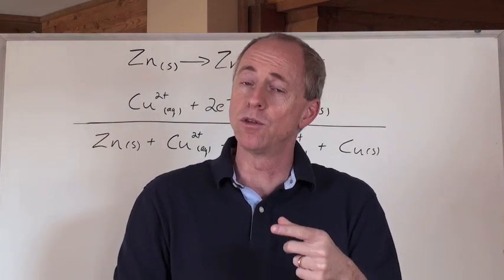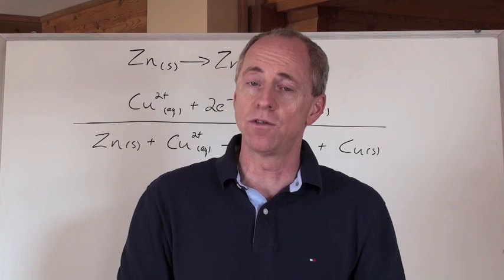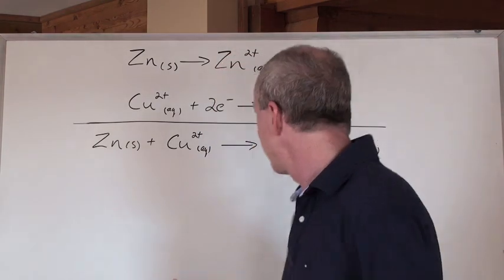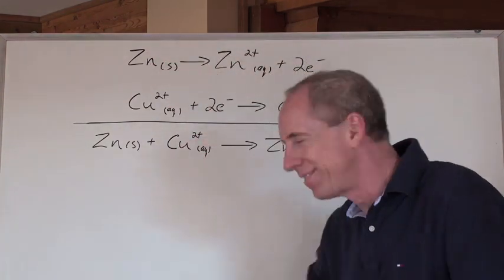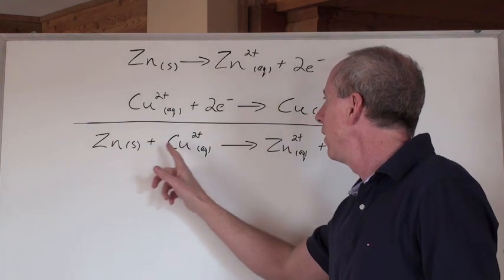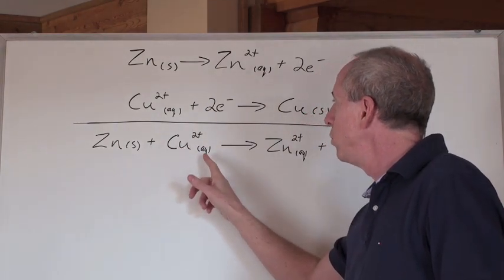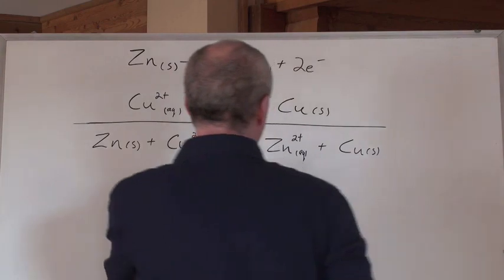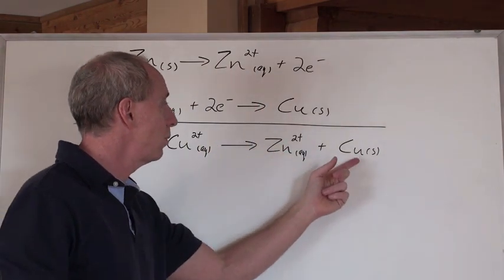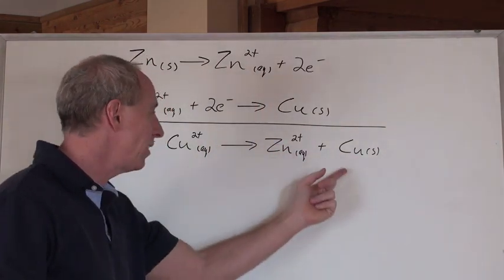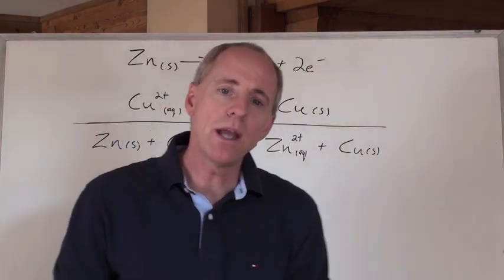And then if you're asked to write the net ionic equation for it, then it would look like this. Here's a piece of zinc metal, and it reacts with copper 2 ions in solution, and what do you get? You get Zn2+ plus Cu solid. That's a balanced net ionic equation.